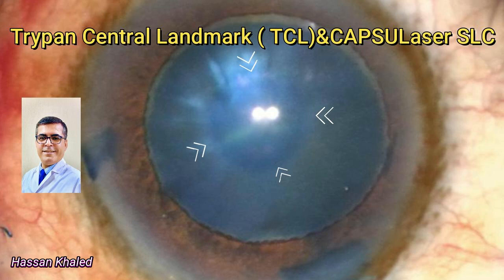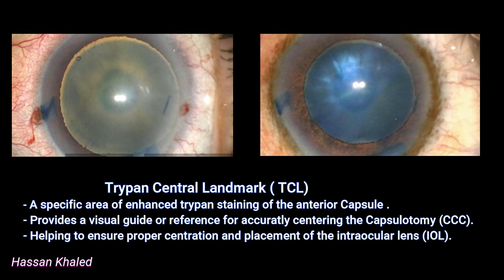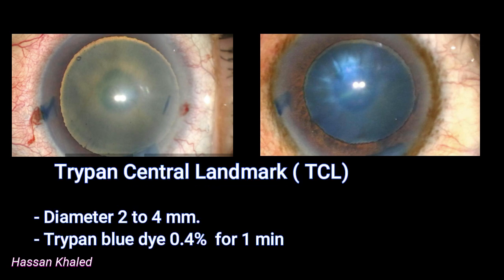In this video, I'm going to highlight some important information about the tri-band central landmark while doing phacoemulsification applying the capsule laser technology. It is a specific area of enhanced tri-band staining of the anterior capsule that provides a visual guide for accurately centering the capsulorrhexis, helping to ensure proper centration and placement of the IOL. It is between 2 and 4 mm, and it presents while using a special tri-band blue dye at 0.4%, which is a micro-filtered blue dye.